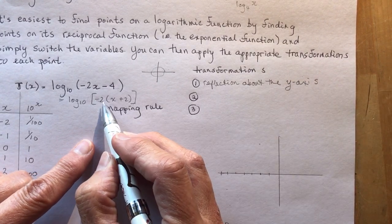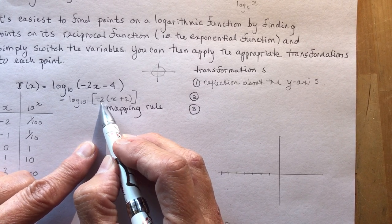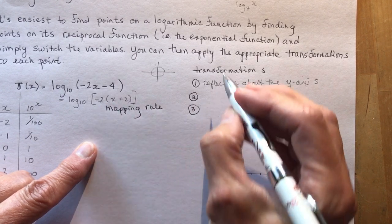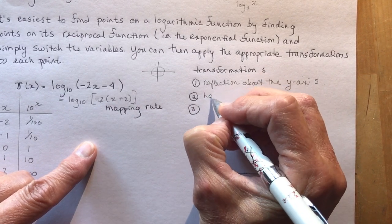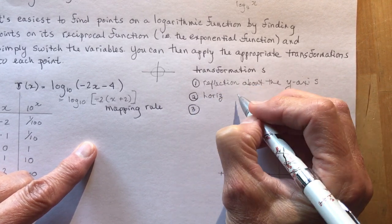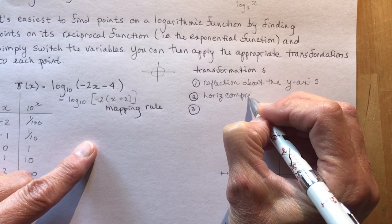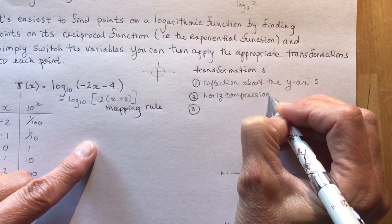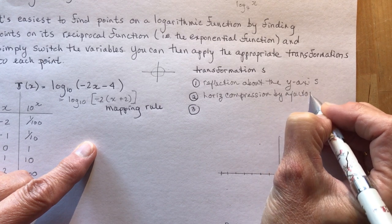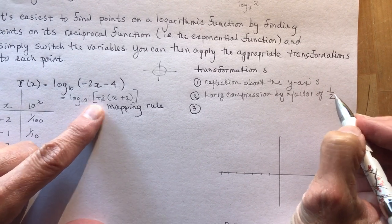What does the 2 mean? So remember again, X's are weird. So if I have a 2 up front here, my K is going to be 1 over K. So that means it's going to be, and X's are all horizontal. So horizontal compression by a factor of 1 over 2. So it's a half. It's compressed by a half.